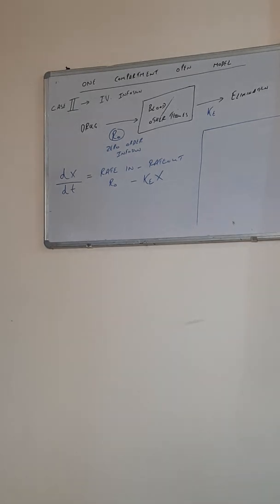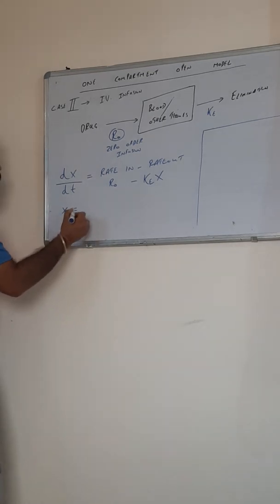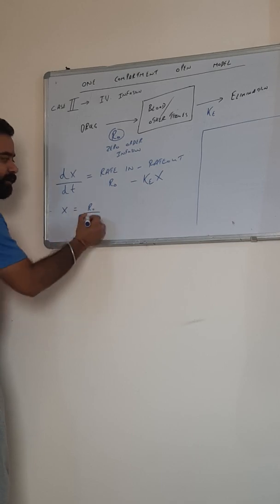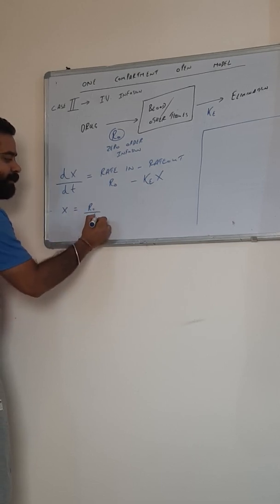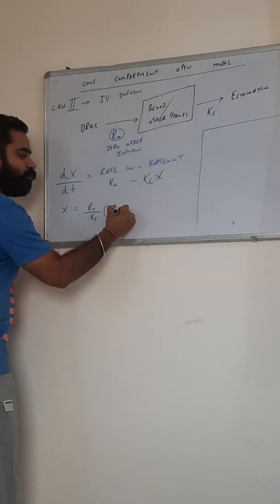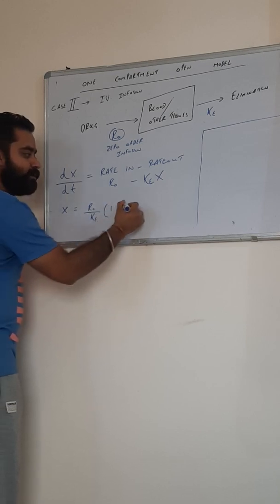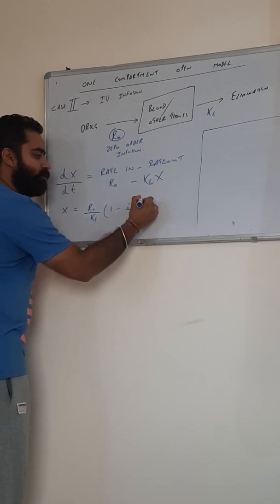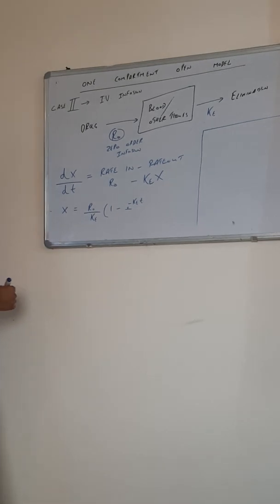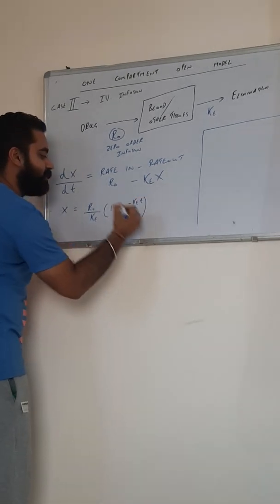On differentiation, integration and rearrangement, carefully, on integration and rearrangement of this equation, we get X is equal to R0/KE in brackets, 1 minus e to the power minus KET in exponential terms.